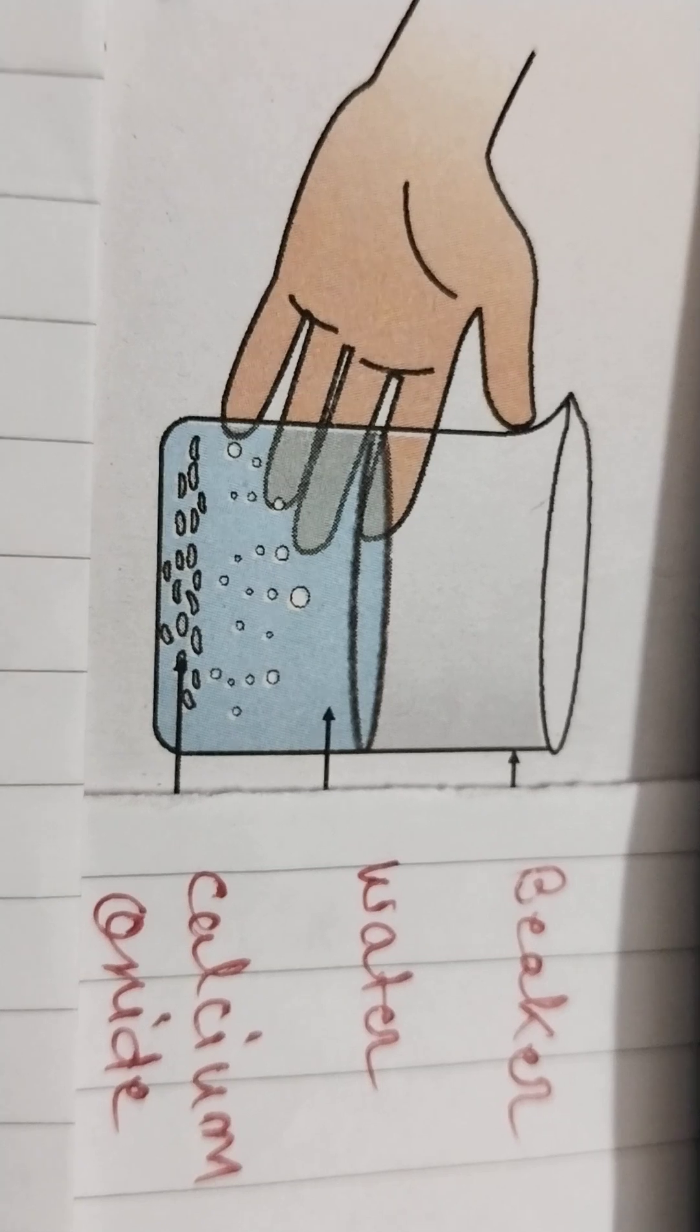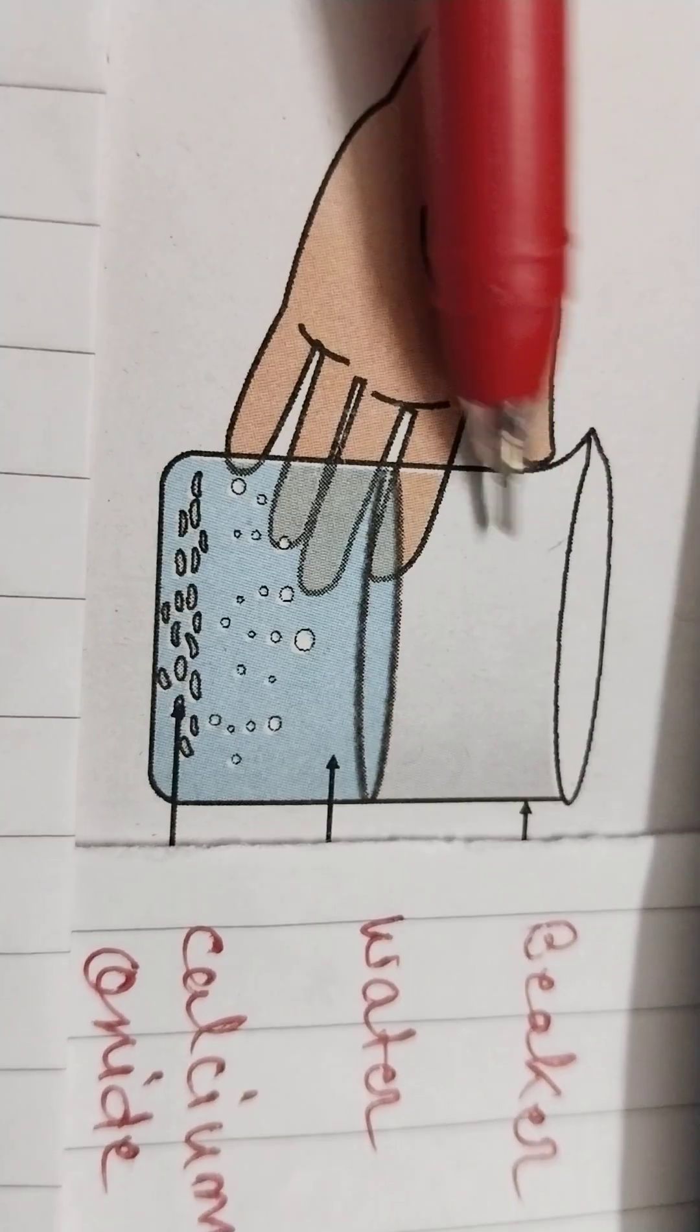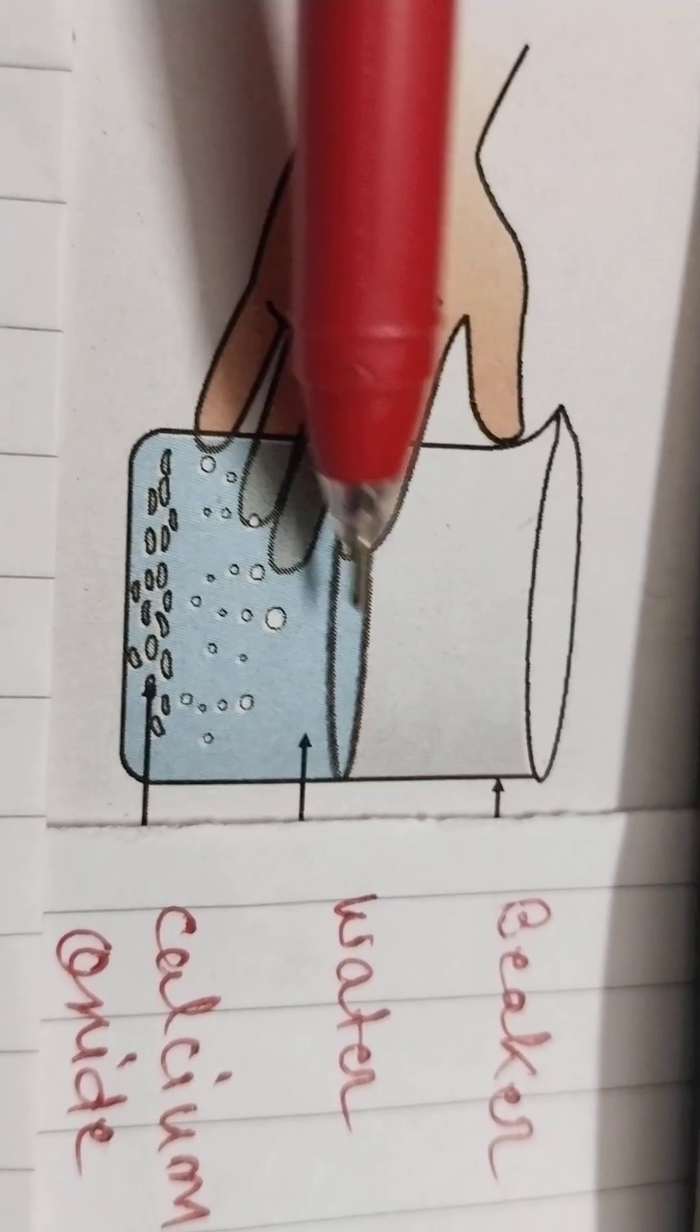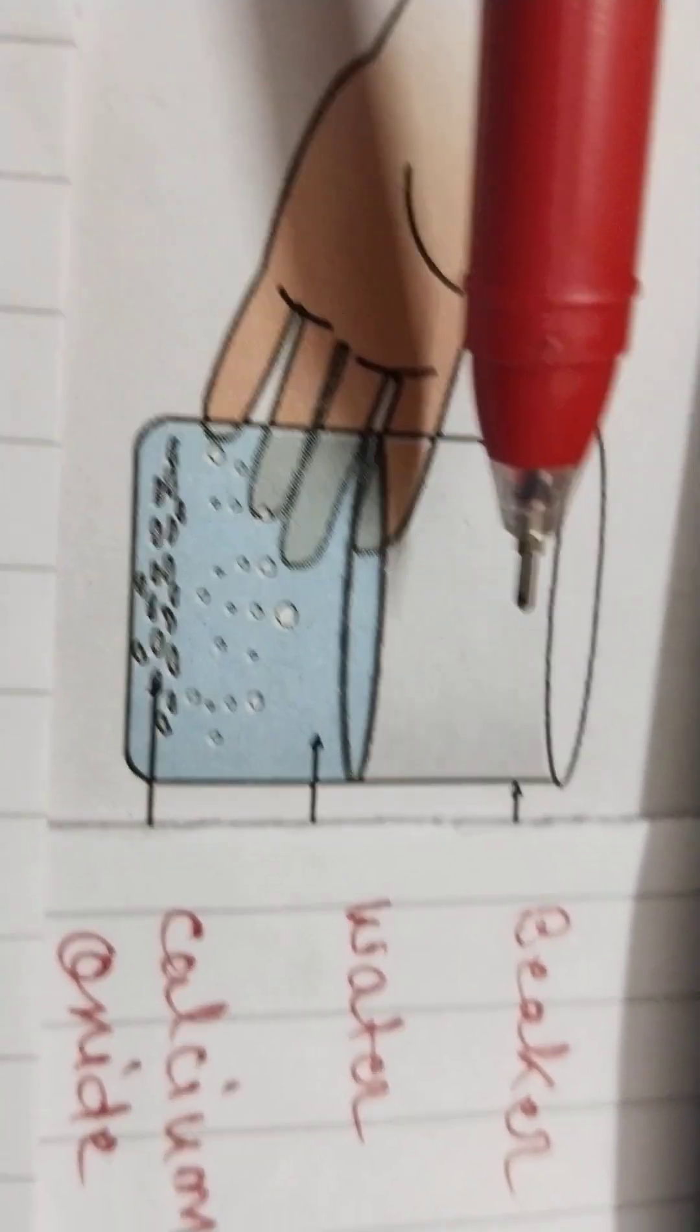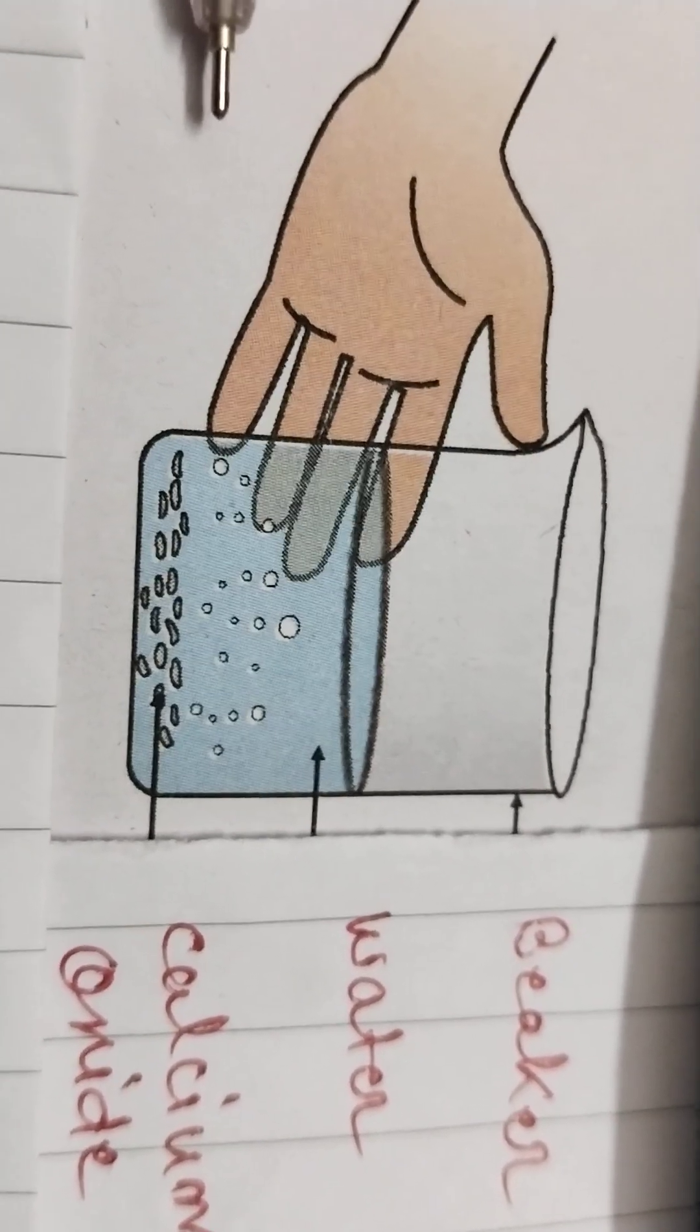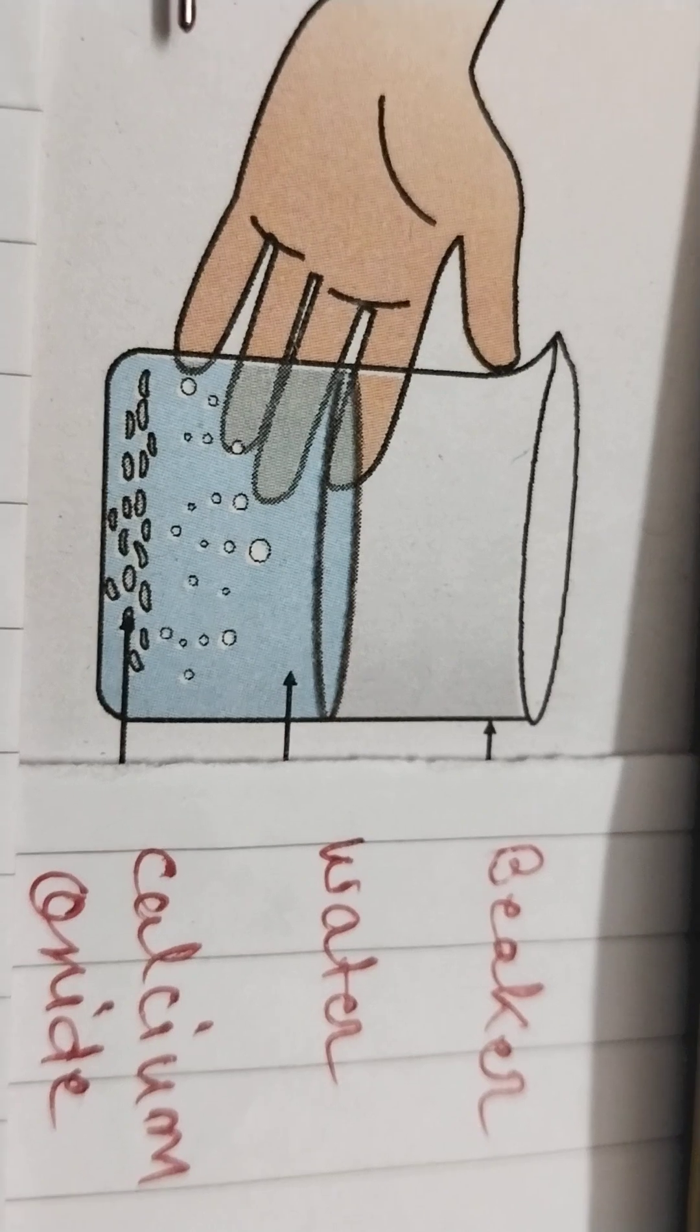Before discussing combination reactions, we have to do one activity. For this activity, we take one beaker with some water in it. After that, we pour some calcium oxide in this beaker. When we pour calcium oxide, the water starts boiling, and when you touch this beaker, you will feel warm.